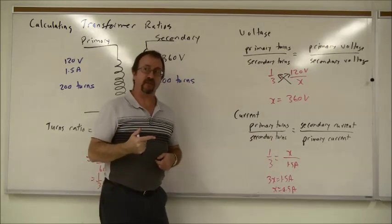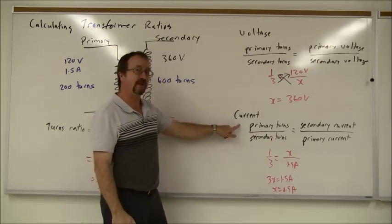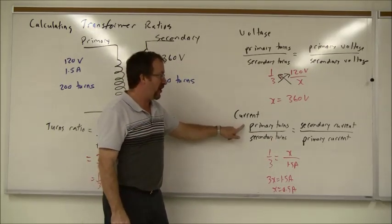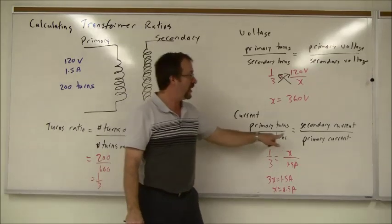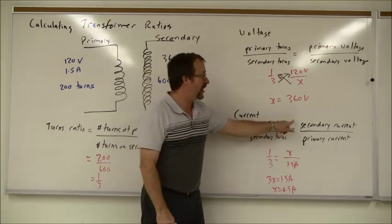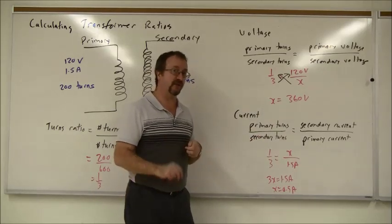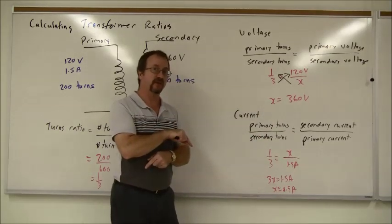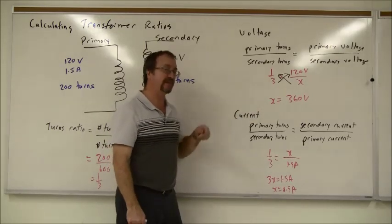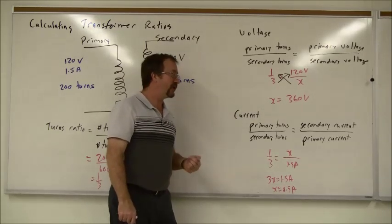Current is inversely proportional to the number of turns. So when I write out my equation, I put primary turns to secondary turns equals, and I flip it. Secondary current goes on top, primary current goes on the bottom, because it's inversely proportional, reverse what voltage does. So if voltage increased in this one, the current should decrease.